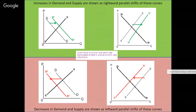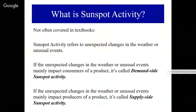That exception is sunspot activity — some textbooks have it, some don't. I like to have a complete list. Sunspot activity generally refers to unexpected changes in the weather or unusual events. If the unexpected change mainly impacts the consumers — the end users who buy and use a product — we call it demand-side sunspot activity. An example: the demand for gasoline in parts of Texas shifted very far to the right. It increased a ton because people believed, although falsely, that there would be a massive shortage of gasoline.